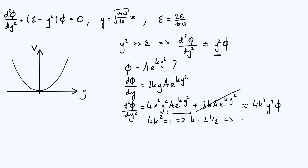Our approximate solution is phi ≈ Ae^(−y²/2), substituting the negative value k = −1/2. Mathematically you could also add a term Be^(+y²/2), but physically that's not acceptable because it becomes infinitely large at large values of y, which doesn't make physical sense. The modulus squared of the wave function represents the probability of finding the particle in a particular region, and you wouldn't expect infinite probability of finding the particle infinitely far from the potential minimum. So we discard the k = +1/2 solution on physical grounds.